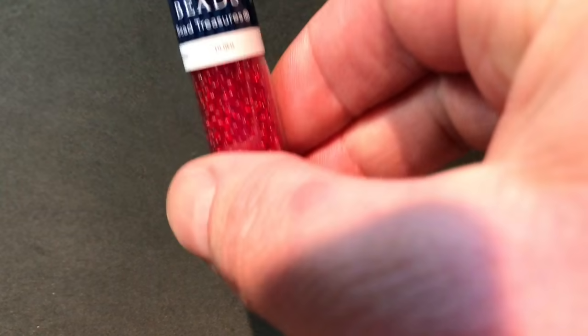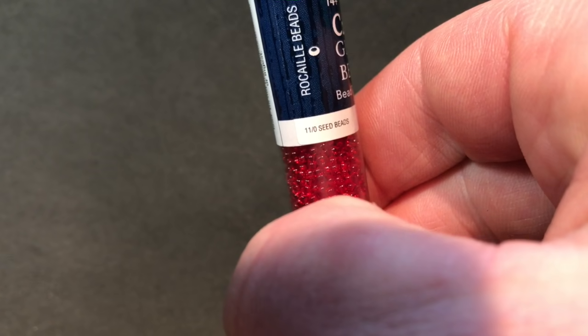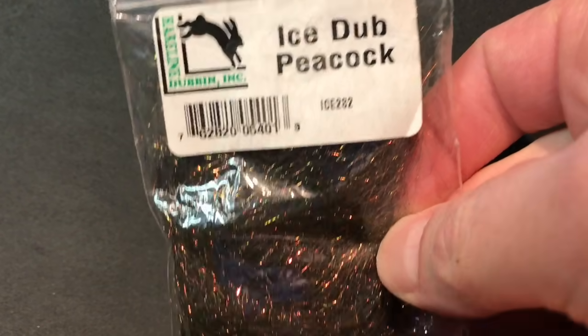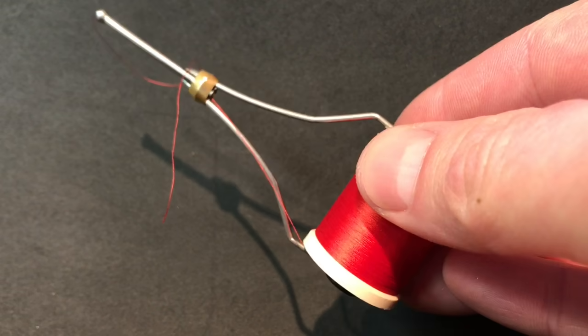The glass beads are from my local craft store, size 11 in red. For the thorax I used peacock ice dubbing and mixed in a little bit of red dubbing, and I used red thread.